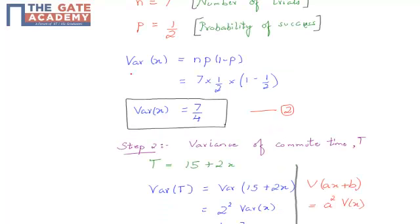The variance for a binomial random variable is n times P times (1 minus P). So the variance of X, where X is a binomial random variable, is 7/4. Let us name this equation number 2.